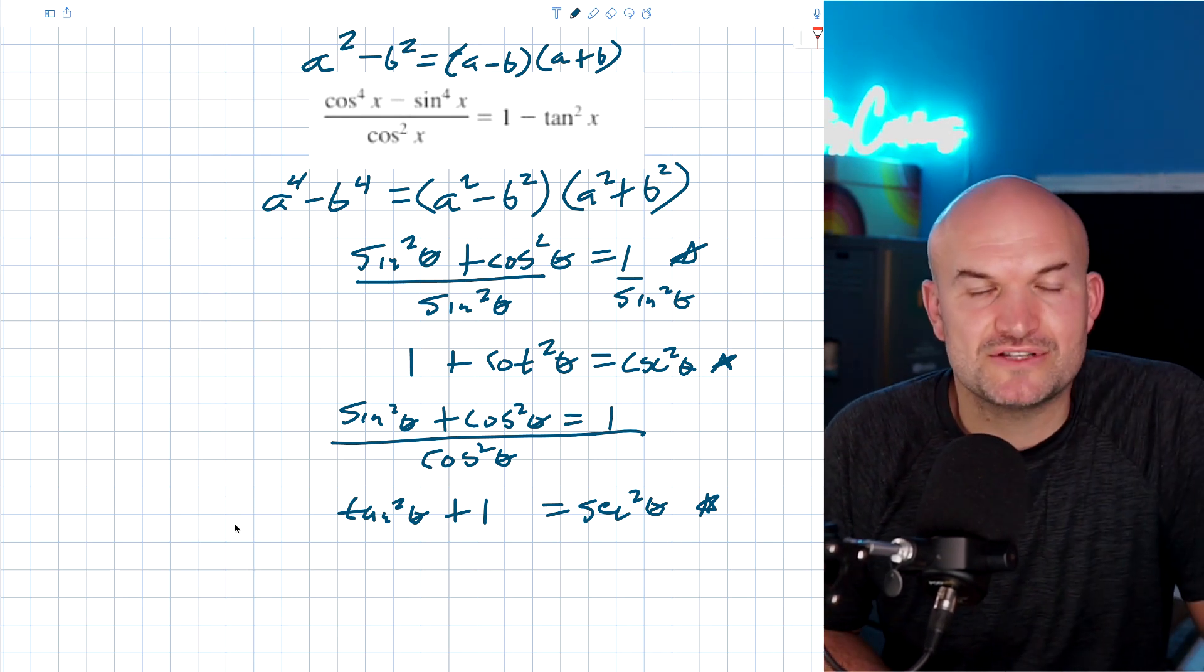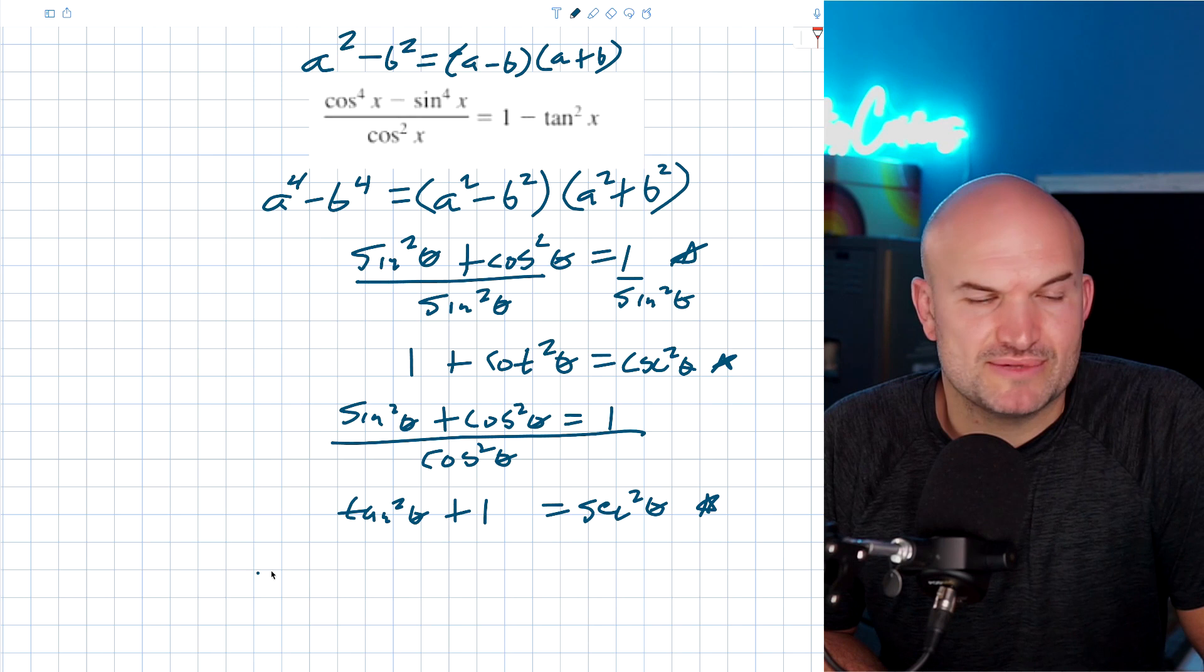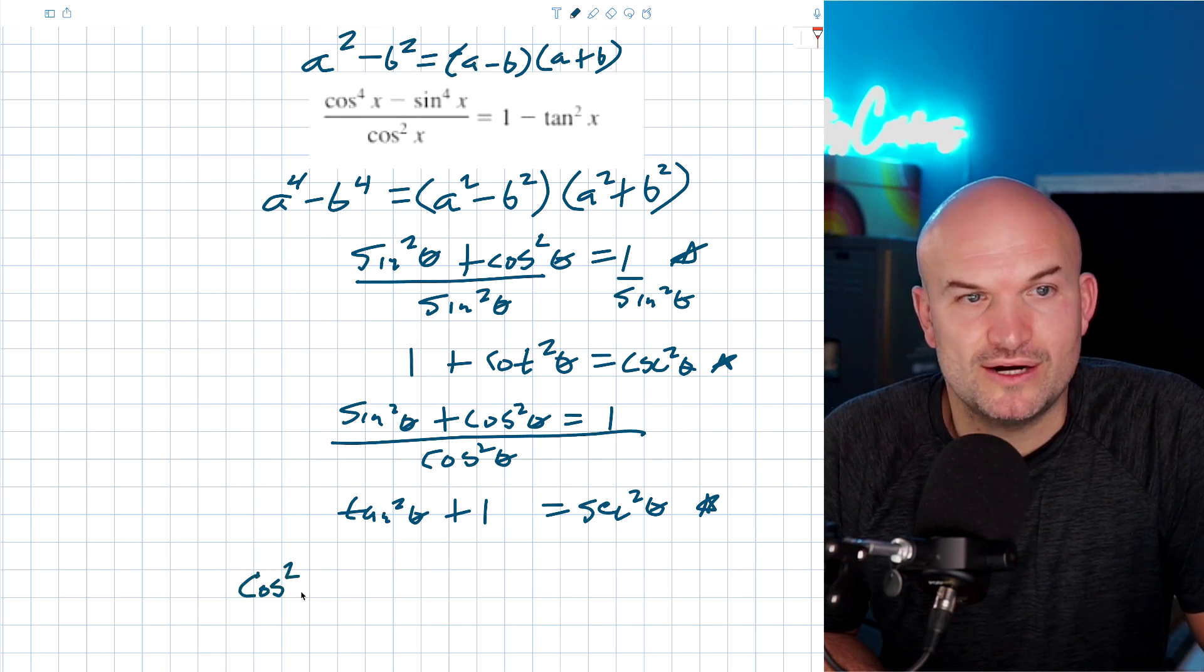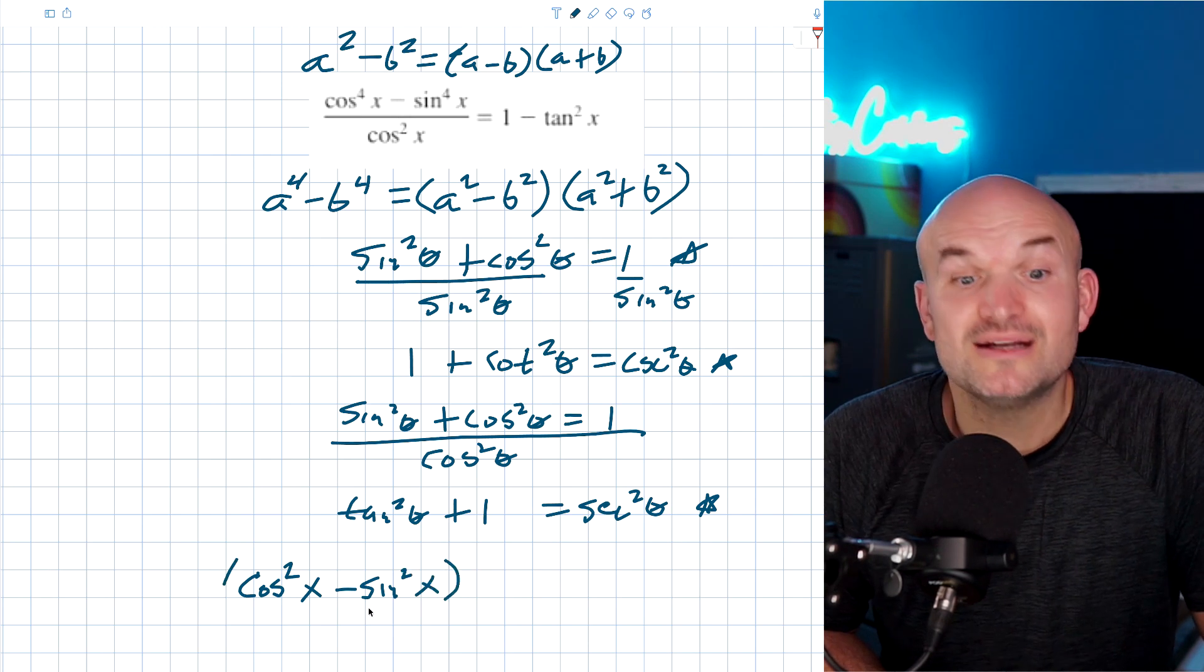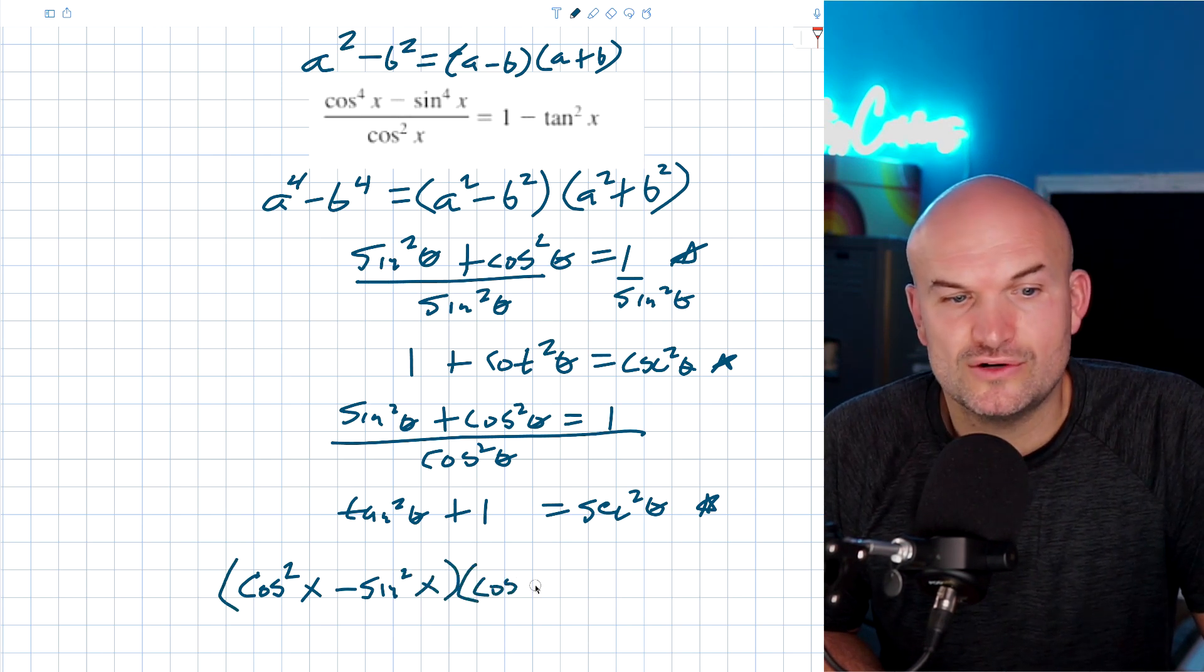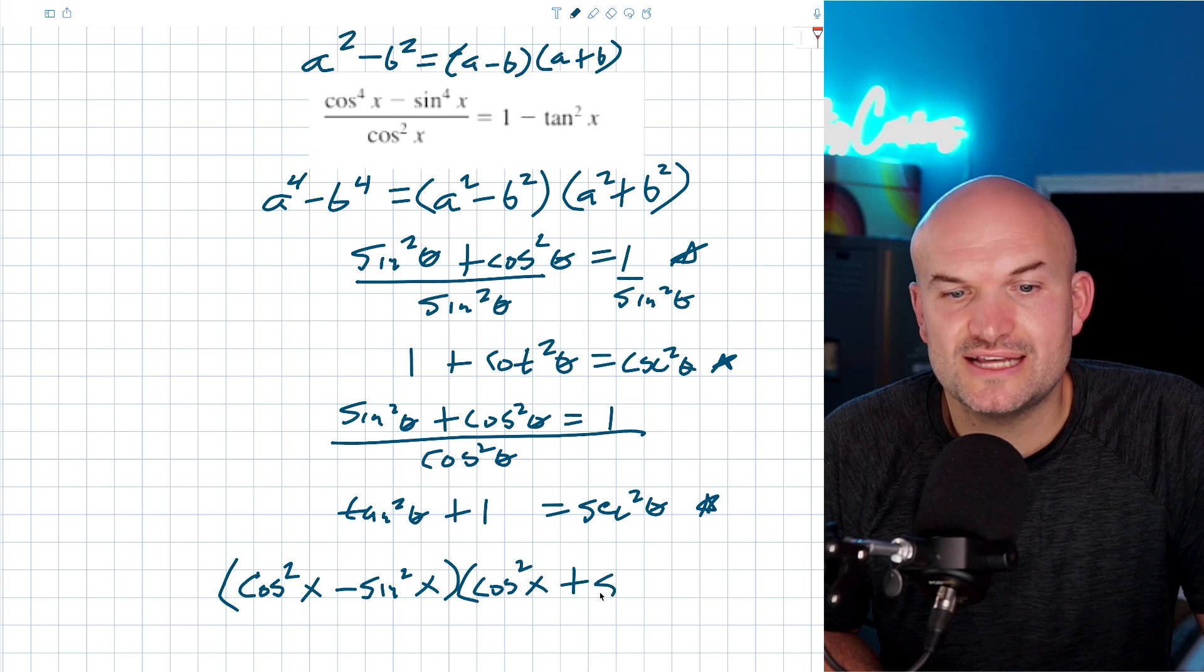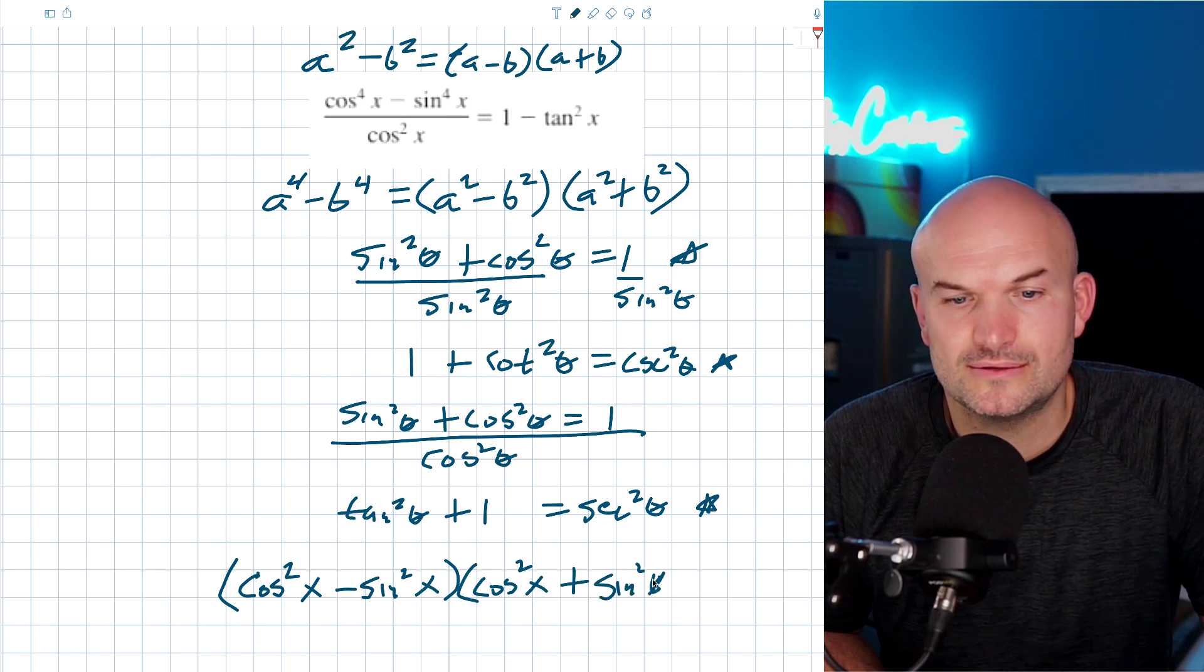Now, if I was going to expand this out using the difference of two squares, I would get a cosine squared of x minus a sine squared of x times a cosine squared of x plus a sine squared of x, right? And that's going to be all over a cosine squared of x.